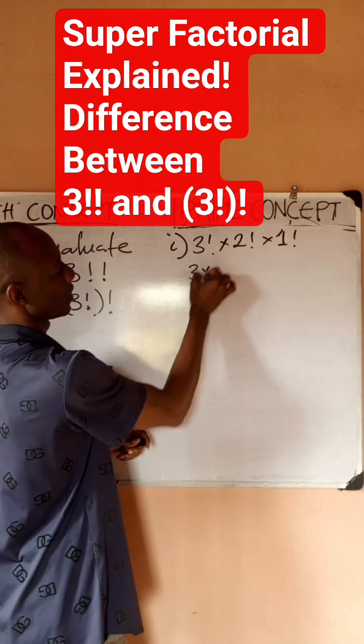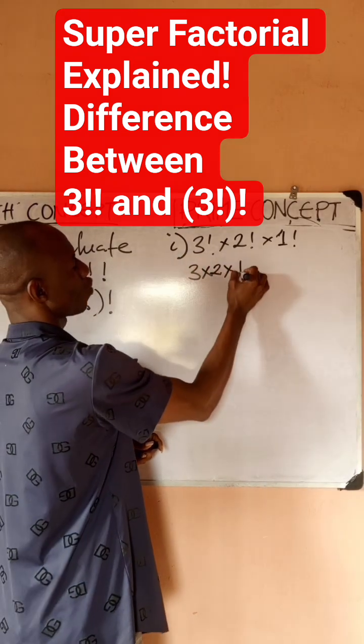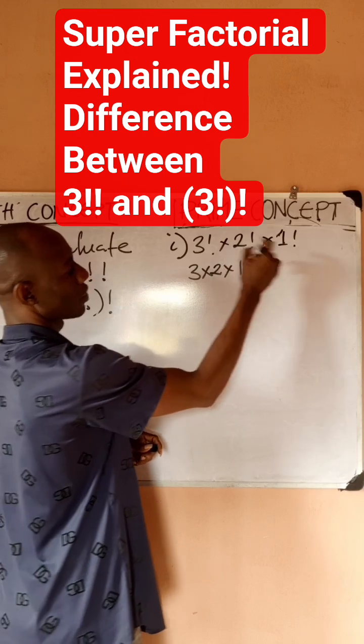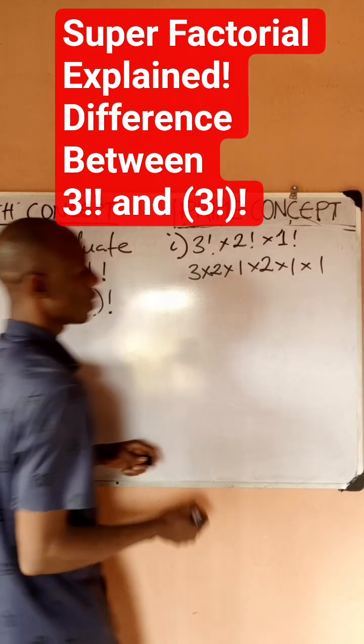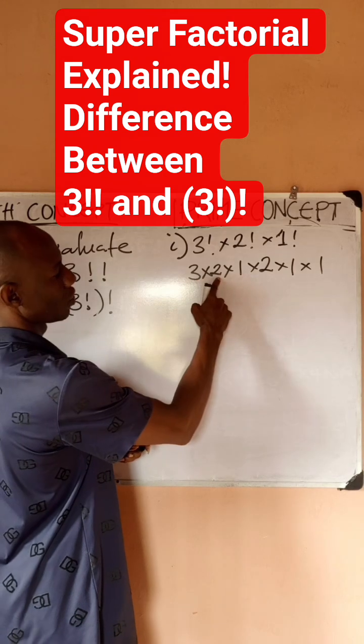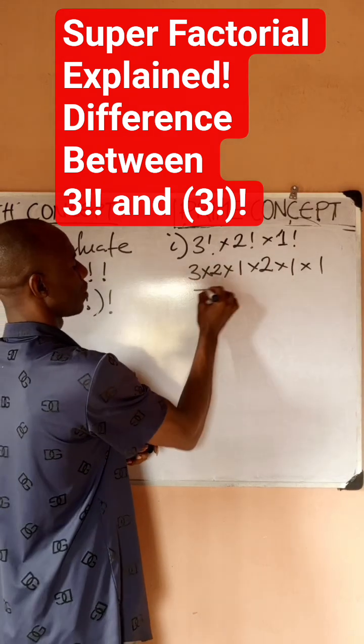Times 1! is one. So if I solve, 3×2 is 6, times 2 is 12. So this is going to give me 12.